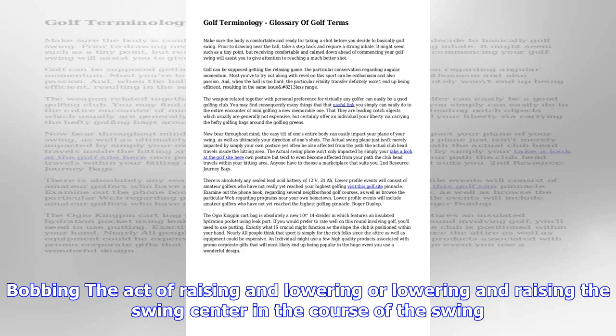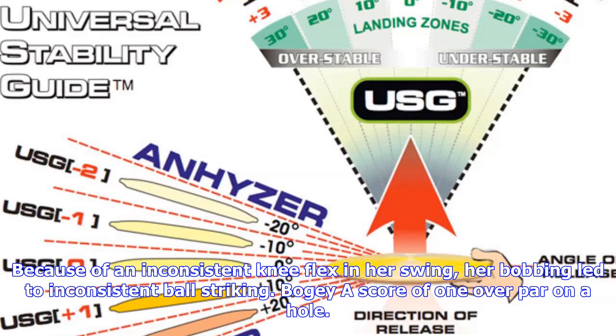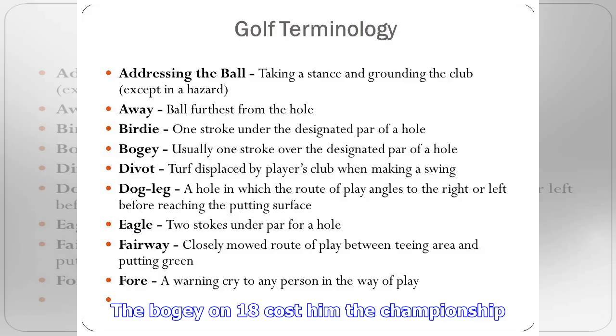Baseball grip: a grip in which all 10 fingers are placed on the grip of the club. Bob Rosberg was a very successful player who used a baseball grip.